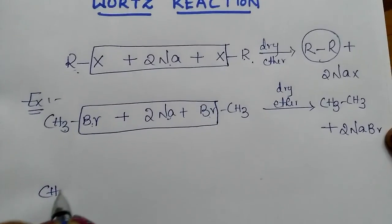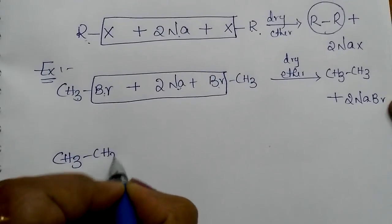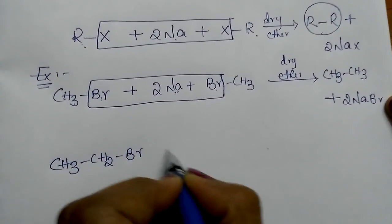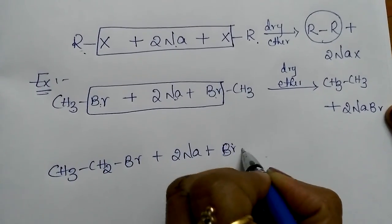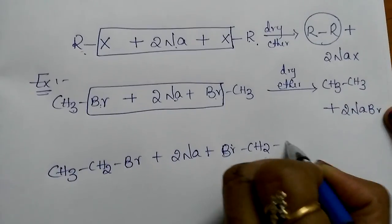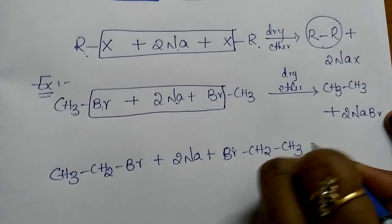In the same way CH3-CH2-Br, ethyl bromide reacts with metallic sodium. Then what will be the product? Try this.